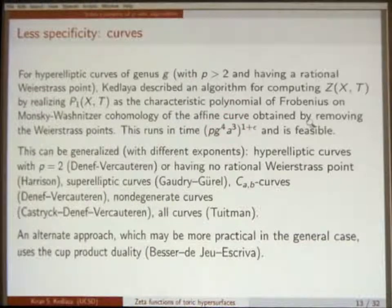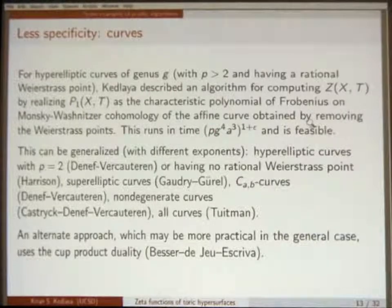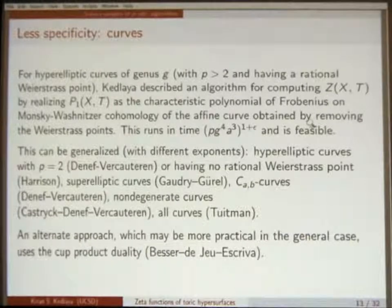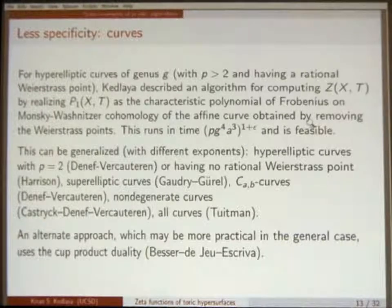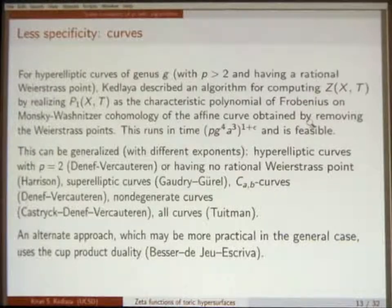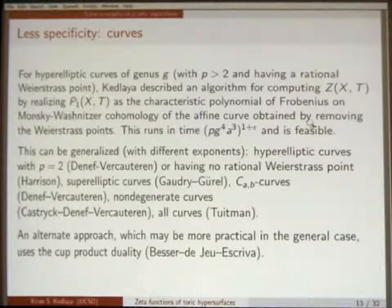We'll see a variant of this construction for the case of toric hypersurfaces later. The runtime has a certain form, at least asymptotically. The point is that it is feasible in all the parameters — you can do examples where A is large, or examples out to a decent size. So it has decent behavior in practice. This is implemented in both Magma and Sage, so you can do experiments with it. And there are lots of generalizations that have been cooked up since then — just talking about curves, there's a sequence of things.